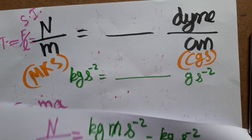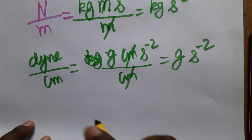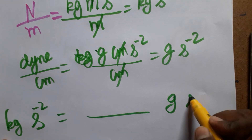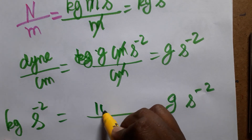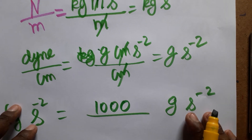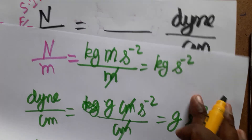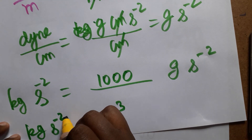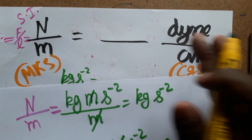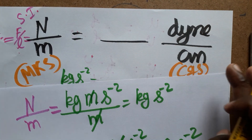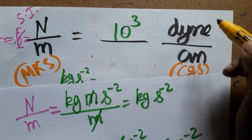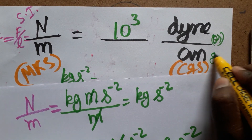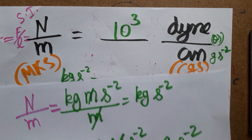We need to convert kg·s⁻² to gram·s⁻². Since 1 kg equals 1000 grams, that is 10³. Therefore, 1 N/m equals 10³ dyn/cm. The equivalent unit in CGS is gram·s⁻², multiplied by 10³.